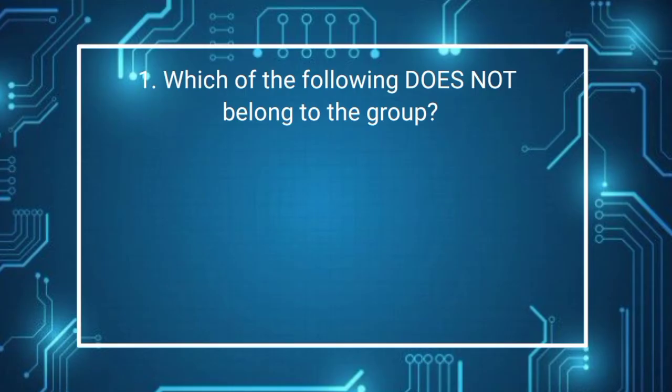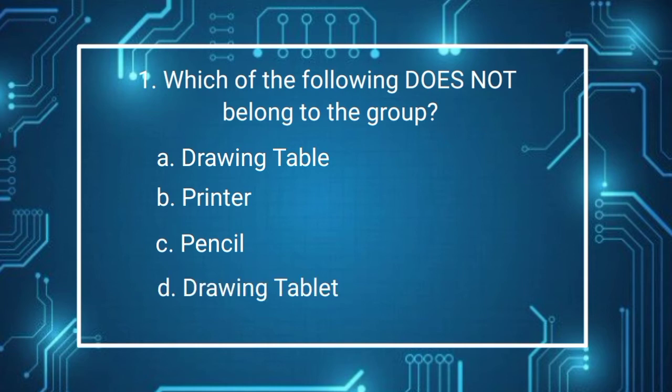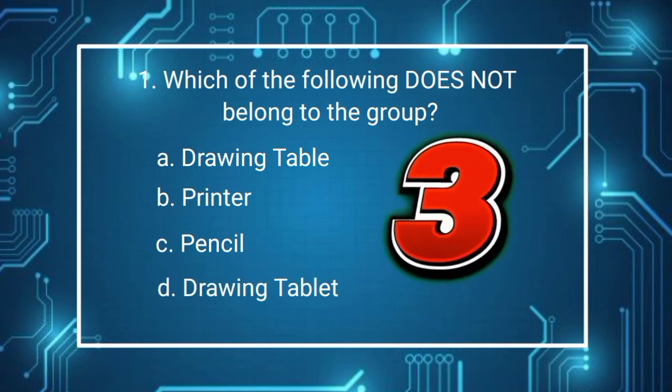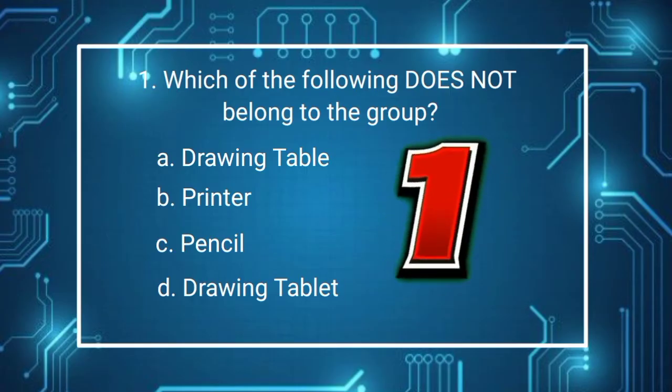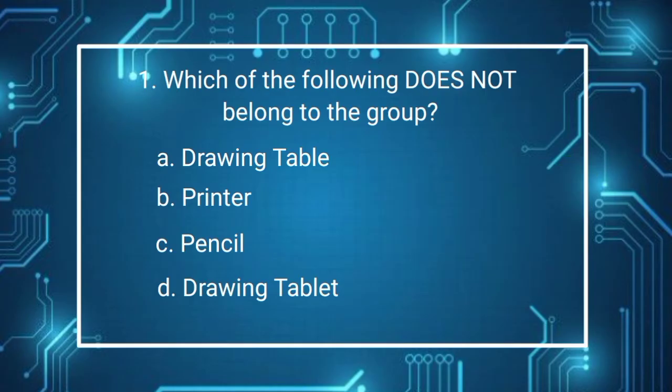Question number 1. Which of the following does not belong to the group? A. Drawing table B. Printer C. Pencil D. Drawing tablet. 3, 2, 1, GO! The answer is C. Pencil. The pencil belongs to hand tools.